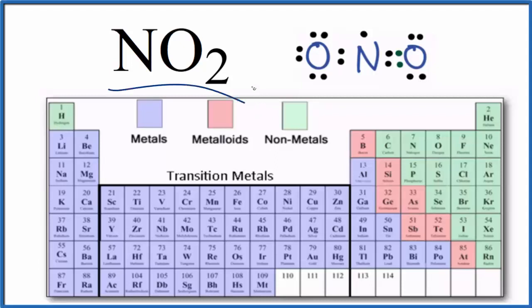To determine whether NO2 is ionic or covalent, let's look at the periodic table divided into metals, metalloids, and nonmetals.